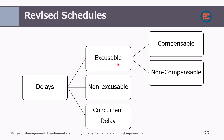Excusable delays have two sub-types: compensable, meaning you deserve extension of time and prolongation costs; and non-compensable, meaning you are entitled to time but not to costs. Non-excusable delays are contractor delays — you are not entitled to time or cost. Concurrent delays require detailed analysis, which we will study in the claims section, but it means that both the client and contractor are in delays simultaneously.